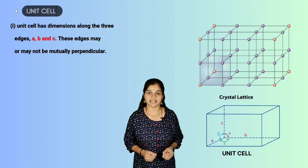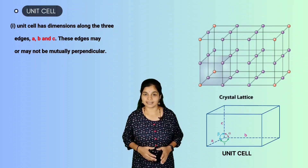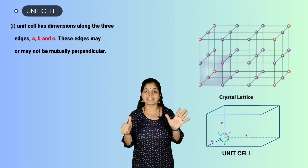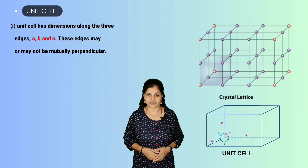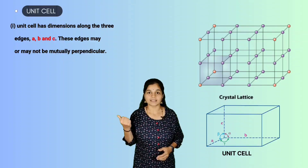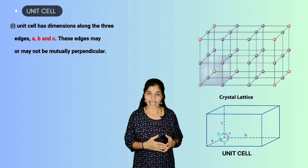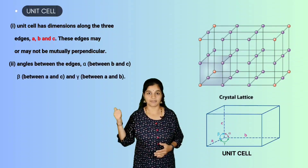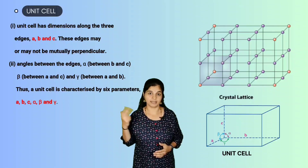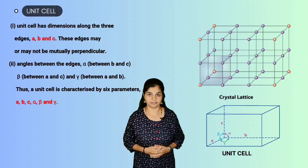Thus, a unit cell is characterized by six parameters: the edges A, B, and C, and the angles alpha, beta, and gamma.